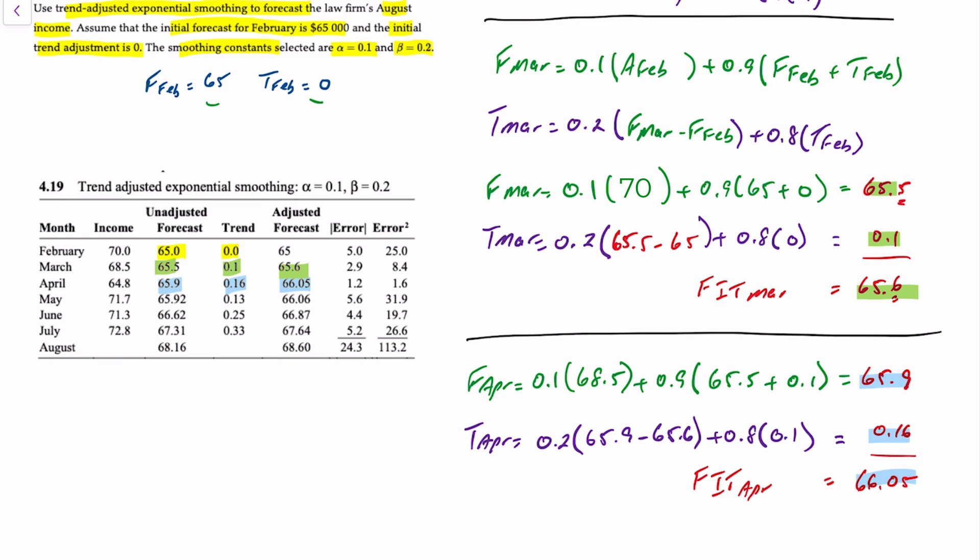In this table, the income represents the actual, the unadjusted forecast is F, the trend is T, and the adjusted forecast is FIT. You can calculate the error between the actual and the forecast, and then square it. The table conveniently adds all of the absolute errors and squared errors. If we divide each of these by six, this gives us an MAD of 4.05 and an MSE of 18.87.